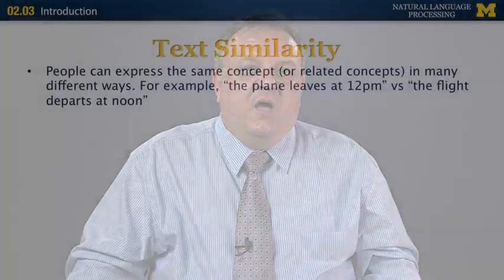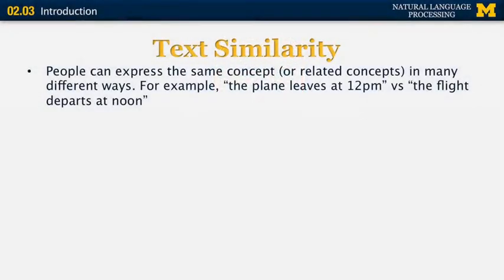This segment is going to be about text similarity. Text similarity is one of the most important applications of linguistics and statistics to natural language processing, and it helps in many different applications. There are many ways in which people can express the same concept or related concepts. For example, we can say the plane leaves at 12 p.m., but we can also say the flight departs at noon. Except for words like 'the' and 'at', the rest of the words in the sentences are very different and yet they express the exact same meaning.